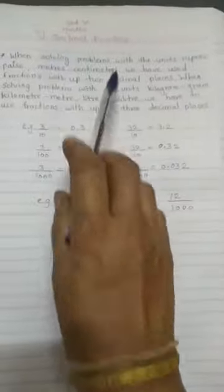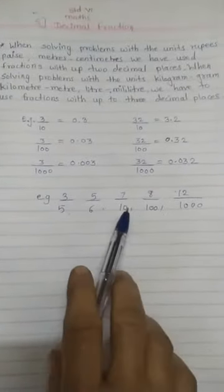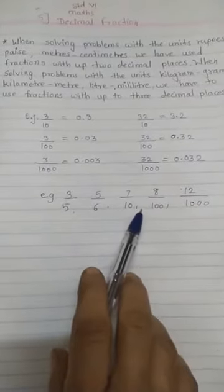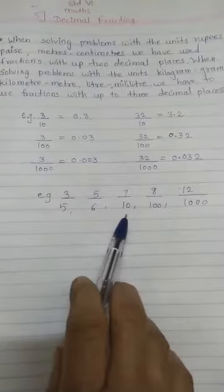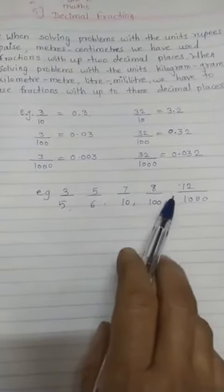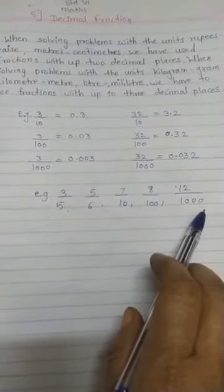But decimal fractions, you know, means what? See, decimal fraction means having the denominator 10 or multiples of 10. See here 7 by 10, 8 upon 100, 12 upon 1000. These are the decimal fractions.